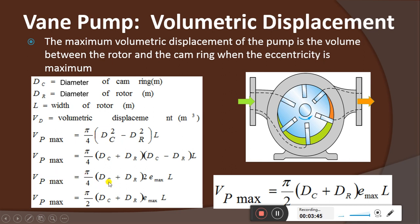From this, VP_max = (π/4) × (dc + dr) × (2 × e_max) × L, because e = (dc − dr) / 2 is the eccentricity. Substituting dc − dr = 2 × e_max and simplifying: the 4 and 2 cancel to give (π/2), so VP_max = (π/2) × (dc + dr) × e_max × L. This is how the volumetric displacement equation is derived from the gear pump equation.